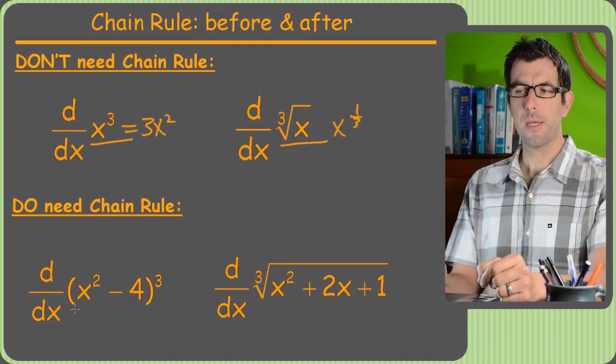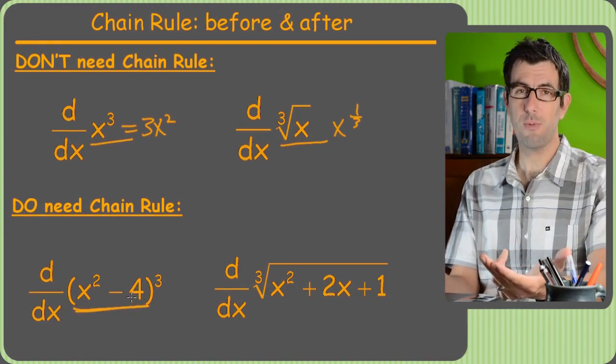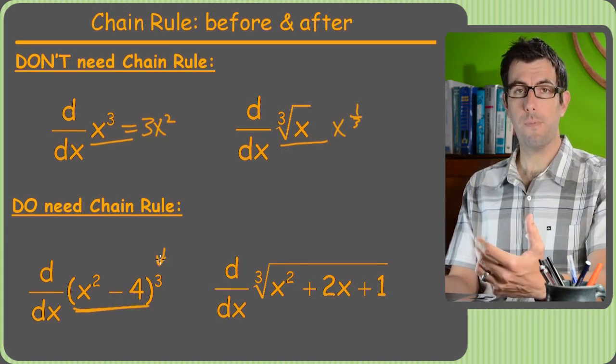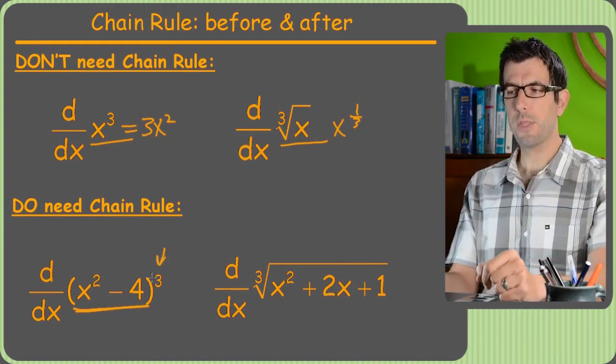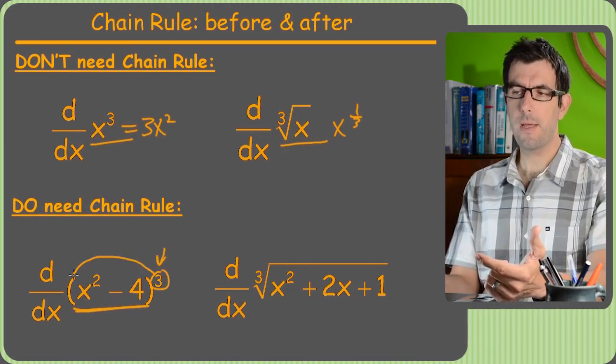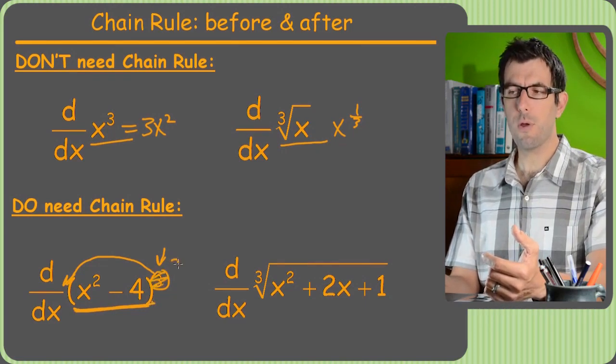But check this out. We do need the chain rule for this problem. Here we've got a bunch of stuff, in this case a polynomial raised to a power. So we still want to use the power rule. The derivative of this is still gonna be like your typical power situation. You take the old power put it out front. Then we're gonna keep this stuff the way it is. Then we'll have a new exponent that's one less. So it's two.